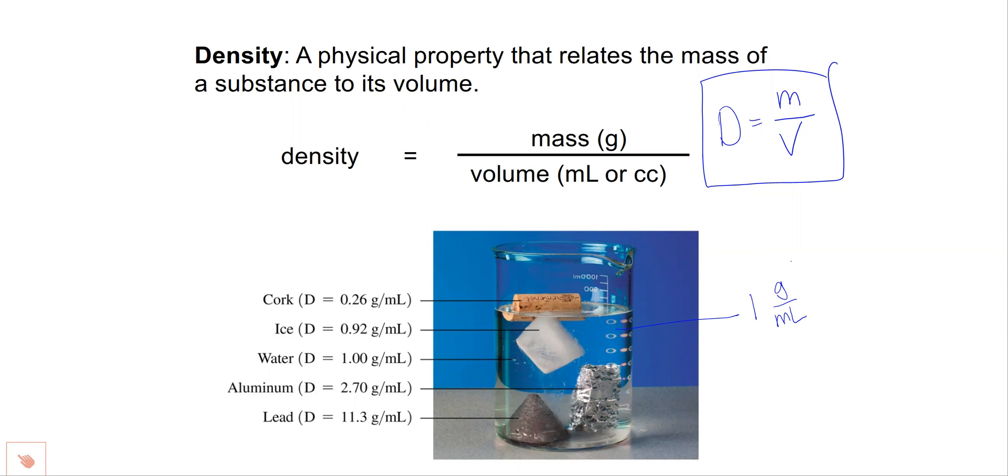And things that float, like cork, will have a smaller density that's less than that one gram per milliliter. And heavy objects like aluminum or lead will have a density much greater than one, and so they'll sink in water because they're heavier for the same amount of volume.